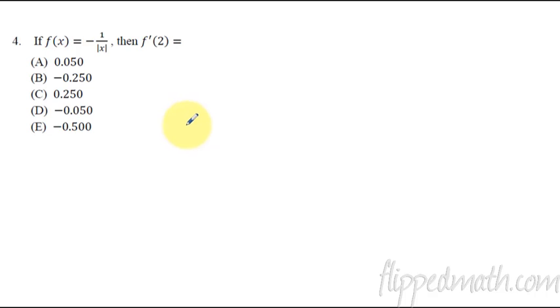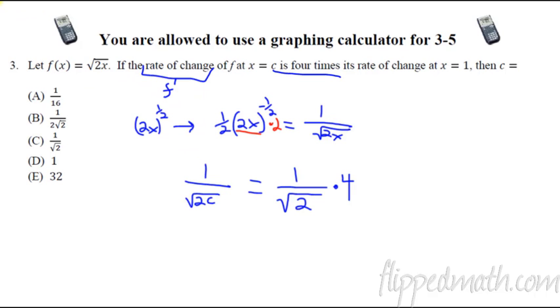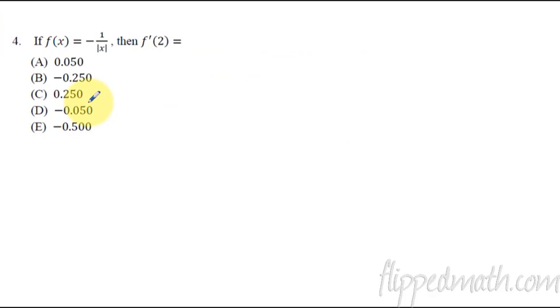Number 4 is a pretty basic calculator one. If you notice on this other one back here, number 3, it said we could use a calculator, but it really wasn't that necessary. This one, a calculator is very helpful. And all you have to do, with the TI-84s at least, is you hit math 8. Because math 8 lets you do the derivative. So whatever calculator you're using, just take the derivative of this thing and plug in a 2. That's all you have to do.